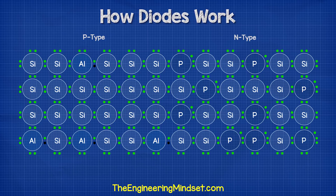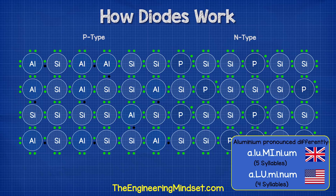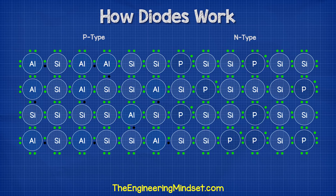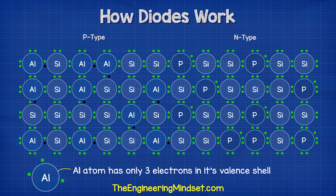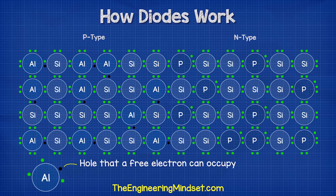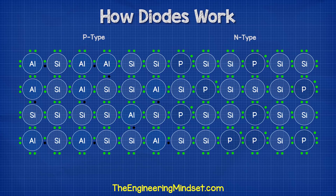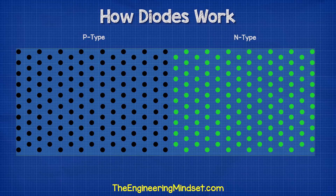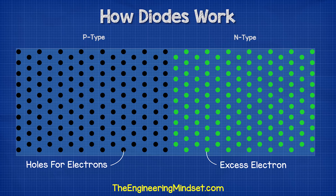With P-type doping, we add in a material such as aluminum. This atom has only three electrons in its valence shell, so it can't provide its four neighbors with an electron to share. So one of them will have to go without. There is therefore a hole created where an electron can sit and occupy. So we now have two doped pieces of silicon — one with too many electrons and one with not enough electrons.